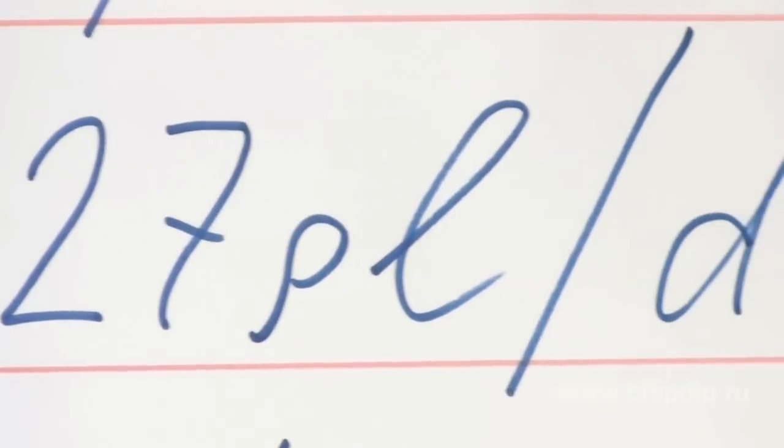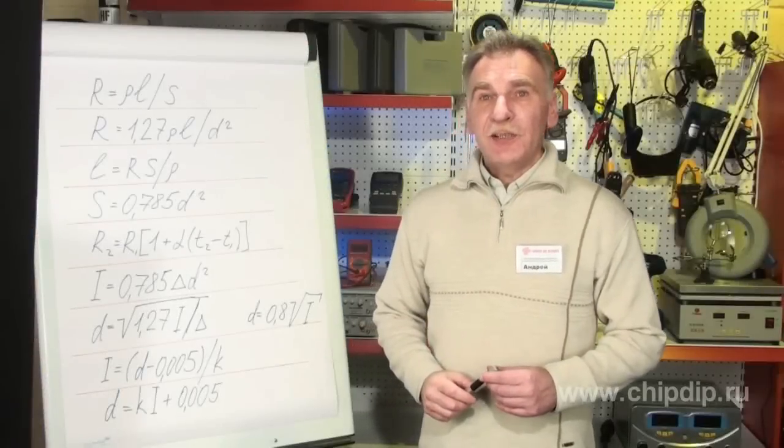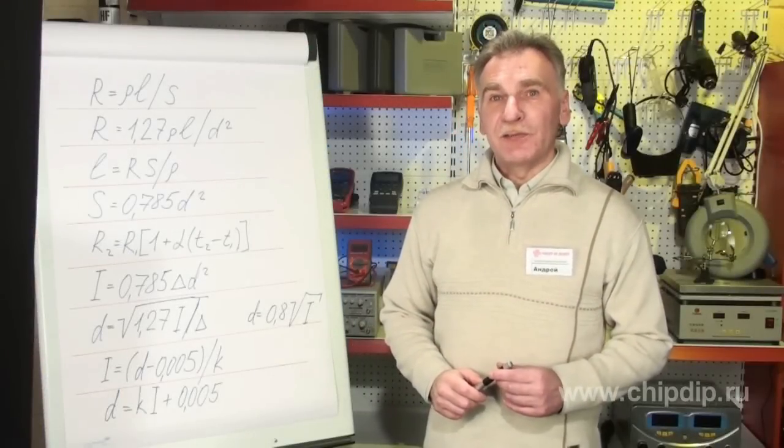If you know the cable diameter, the formula will look as follows: R equals 1.27PL divided by D squared.